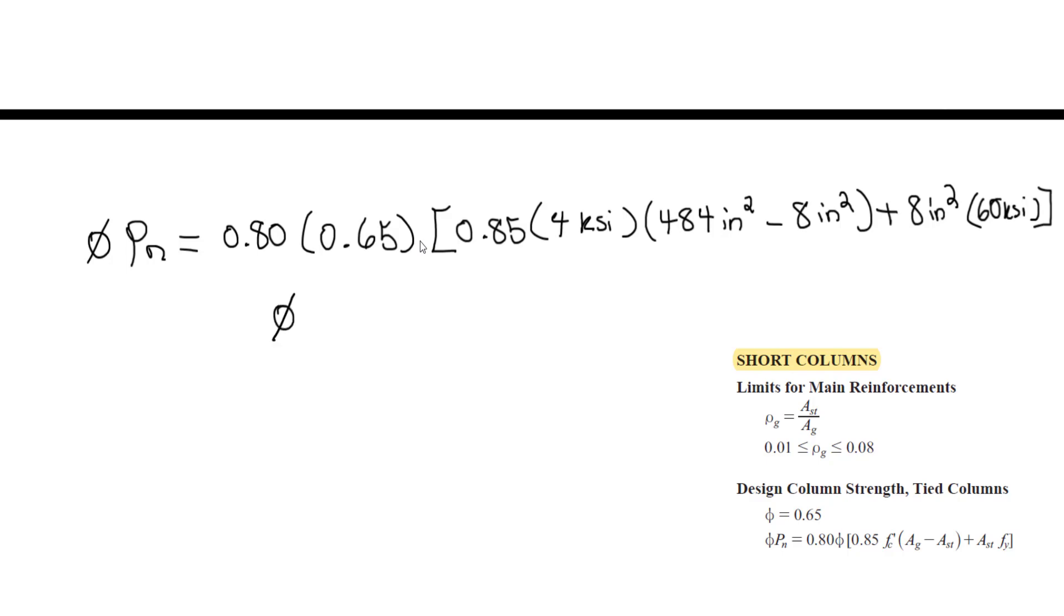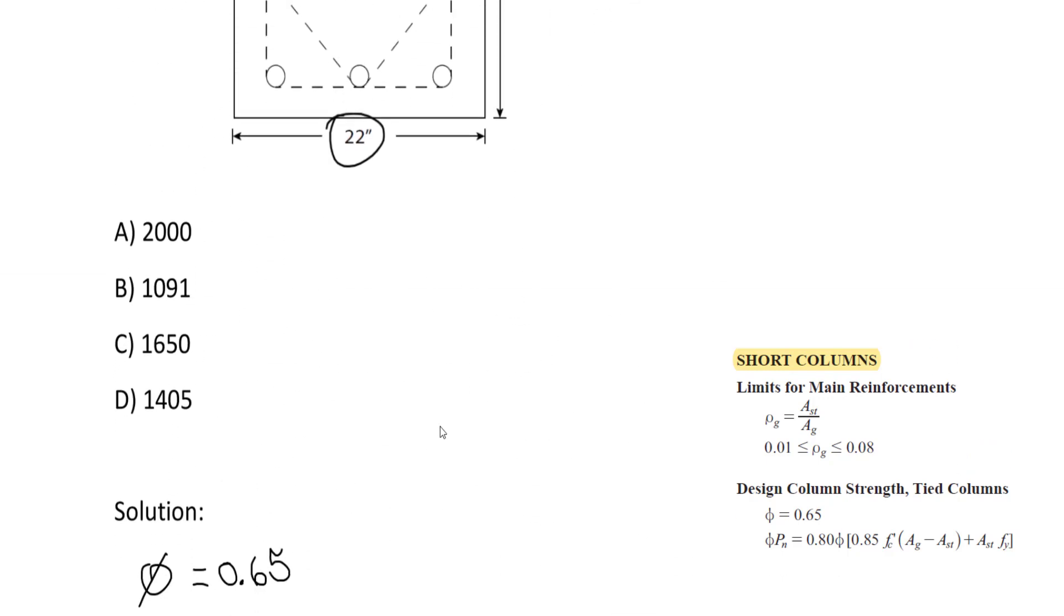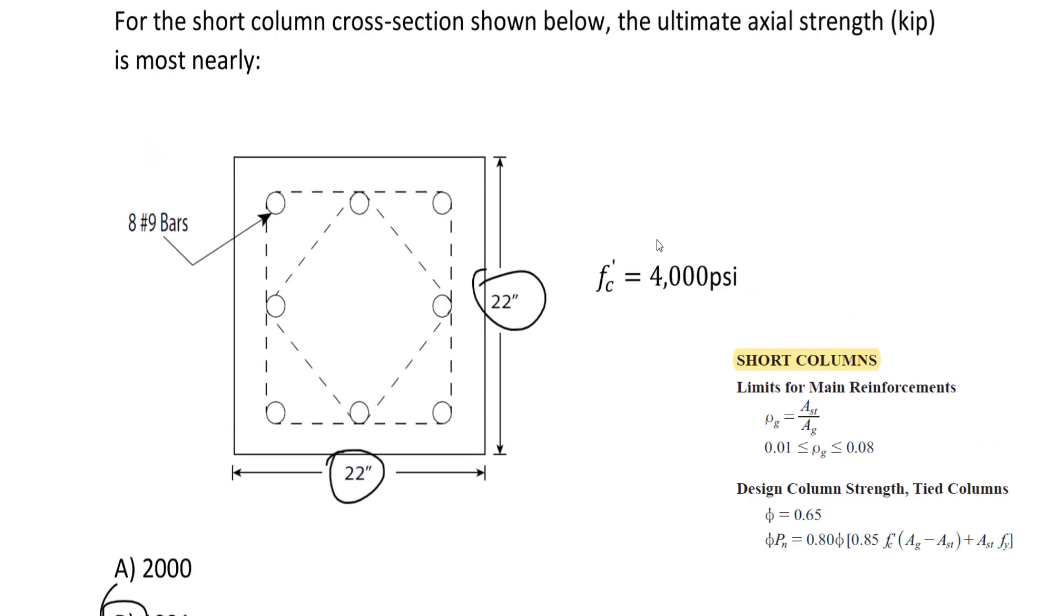Close the bracket. If you do the math, we get about 1,091 kips. That's our answer, which is option B. Note that this approach is only for short columns, and we use page 161 in FE Handbook 9.5.